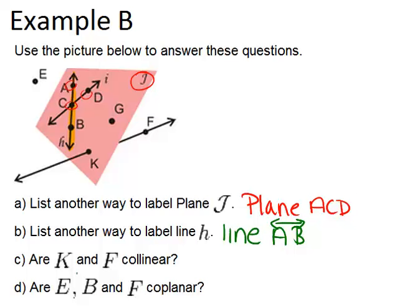C, are K and F collinear? So remember what the word collinear means? Co, that prefix always means same. And we have the word line in there. So collinear means same line. So it's really asking are K and F on the same line? Well, I can see here that this is a line and K and F are both on it. So yes, they are collinear.